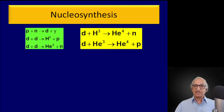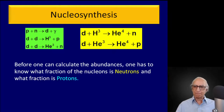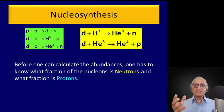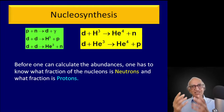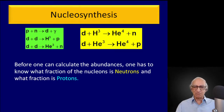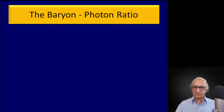Before we can calculate the abundances, one has to know what fraction of baryons were neutrons and what fraction were protons — both are changing with time. That's where the complexity and the beauty of theoretical physics lies. Both fractions change with time.